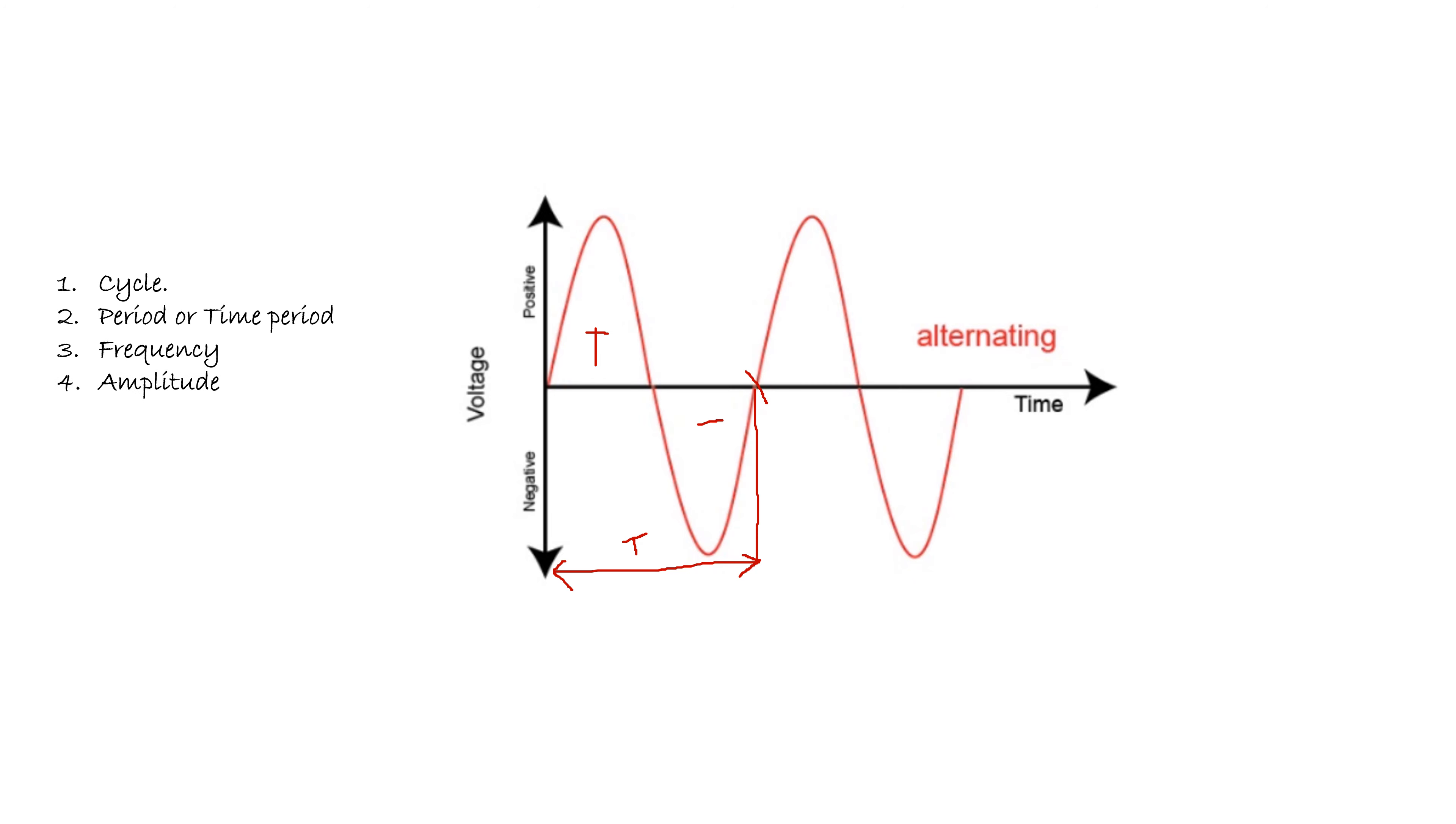The next term is amplitude. Amplitude means the maximum or peak value, either positive or negative, of an alternating quantity. This can be called the amplitude or the negative peak value.